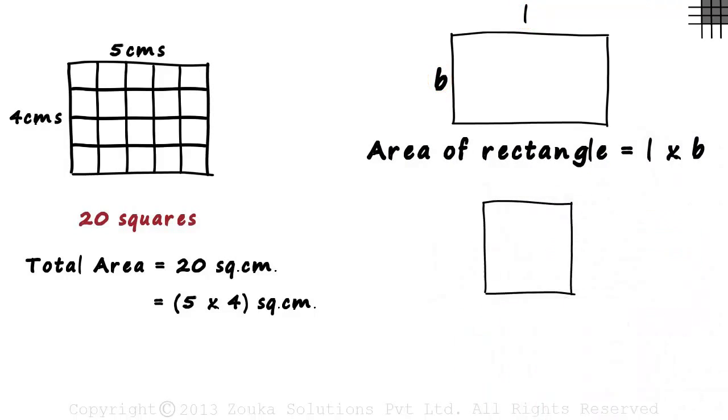If we have a square of sides S centimeters, then the area of the square will be S multiplied by S squared centimeters. That equals S squared squared centimeters. We get S multiplied by S since a square is another form of a rectangle. It is basically a rectangle with the same length and breadth.